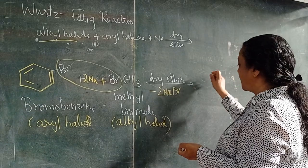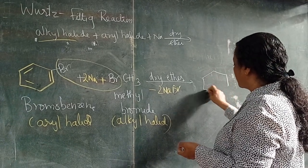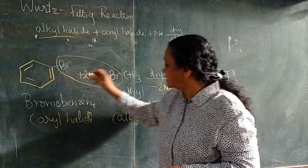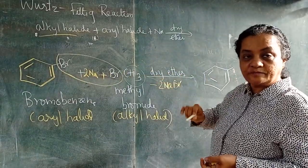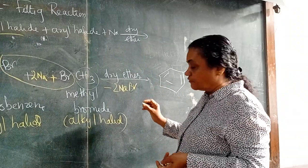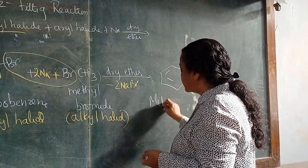Minus NaBr, a bond forms between the benzene ring and methyl group. What you got is methyl benzene.